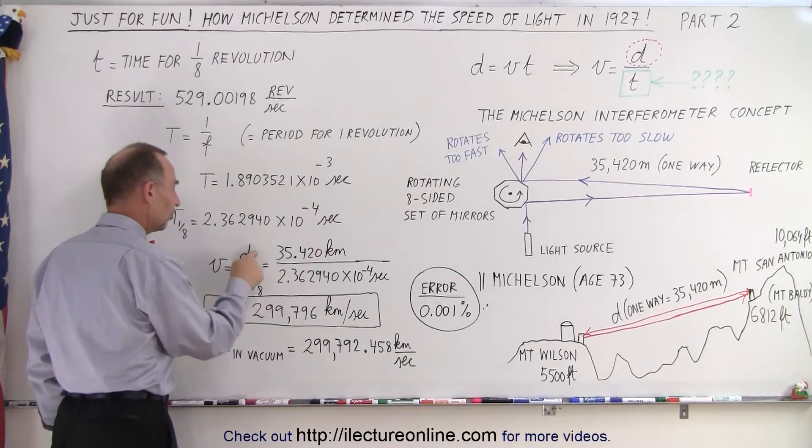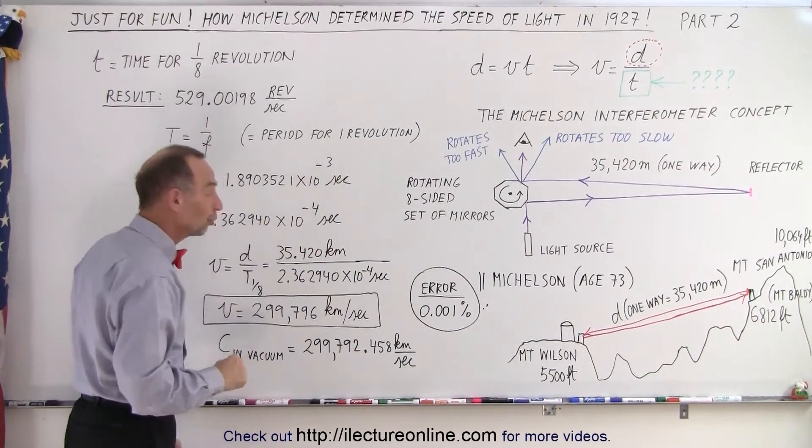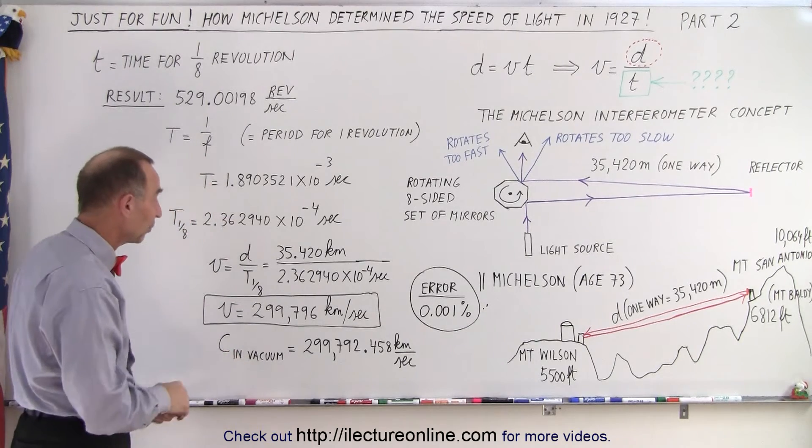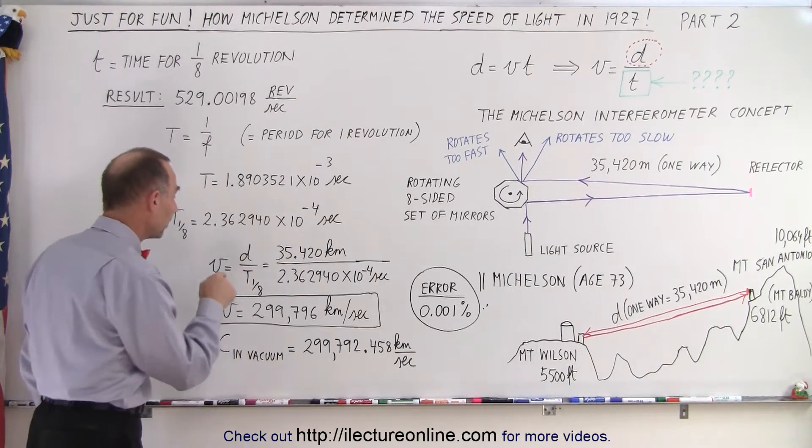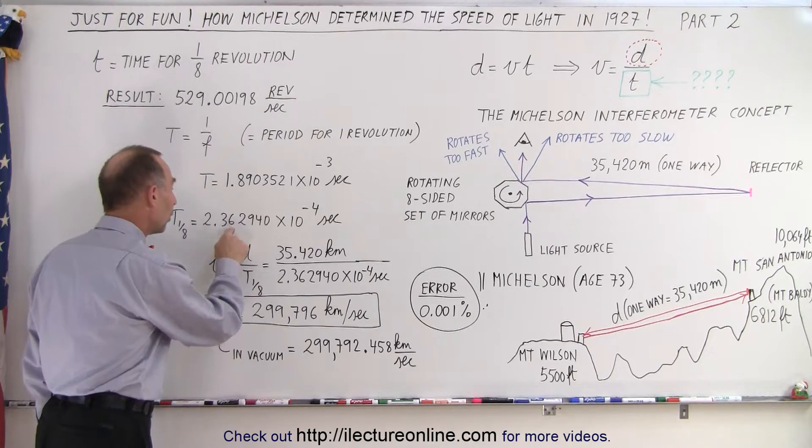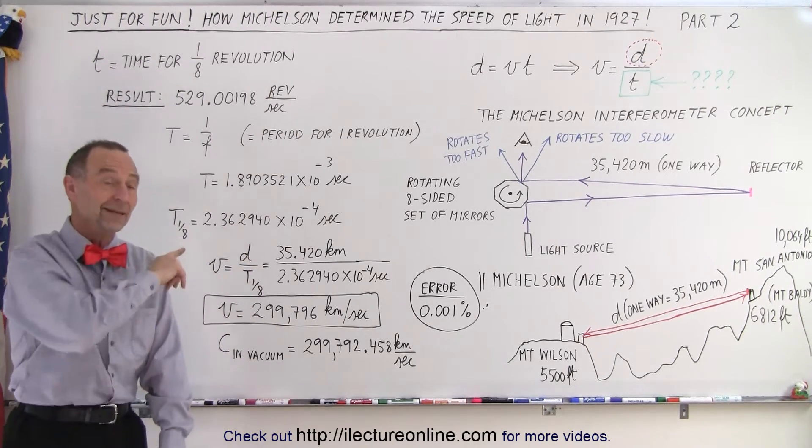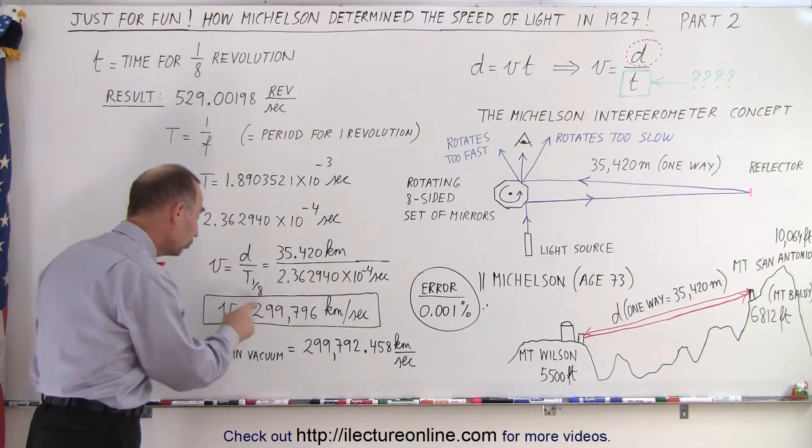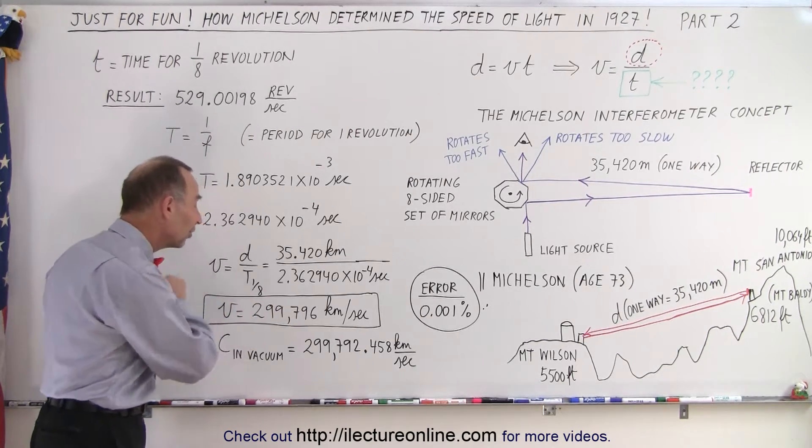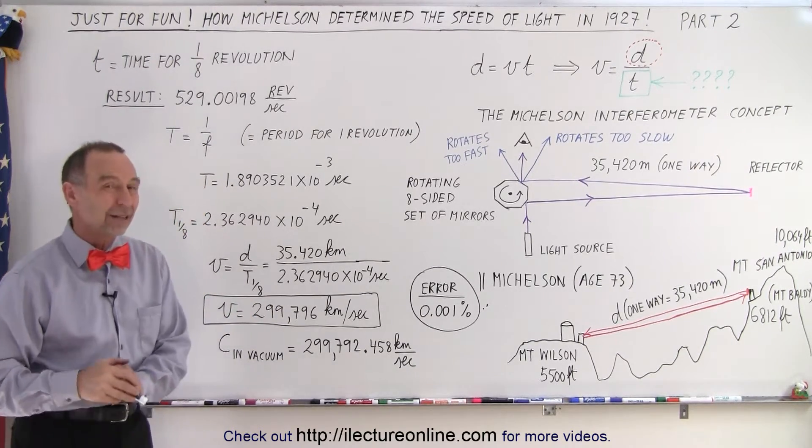So what you do then is you take the distance, 35,420 meters, which is 35.42 kilometers. You divide it by the time that it took to take one eighth of a turn on the wheel and they came out with a speed of 299,796 kilometers per second.